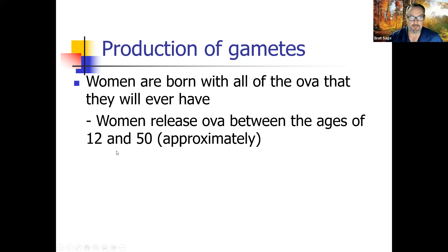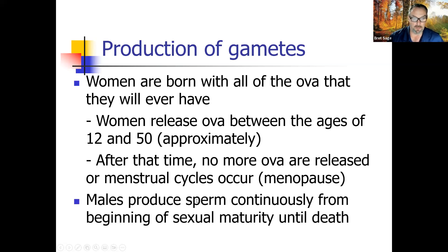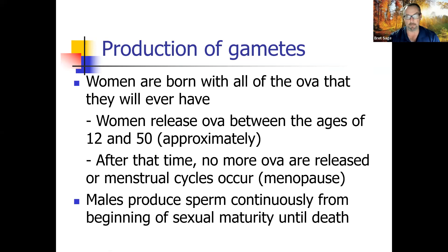Women release ova between the ages of 12 and 50 — the beginning of menstruation through menopause. After that time, no more ova are released and menstrual cycles cease. Males produce sperm continuously from the beginning of sexual maturity — about 13 to 15 — until death. Sperm production diminishes past age 30 but never completely tails off; for example, Charlie Chaplin was a brand new father at age 70.